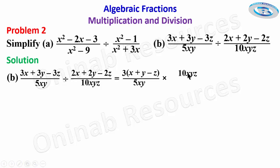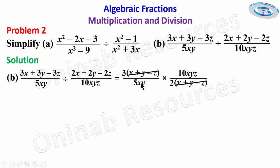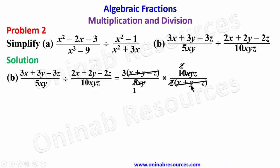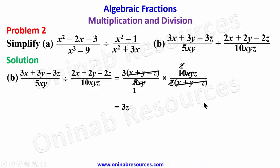We change the division to multiplication and interchange the numerator and denominator of the second fraction, giving 10xyz over 2 into x plus y minus z, since 2 is common in 2x plus 2y minus 2z. Now x plus y minus z cancels with x plus y minus z, xy cancels with xy. For the numerical terms: 5 goes into 10 giving 2, and that 2 cancels with the 2 in the denominator. At the numerator we have 3 and z, and the denominator is 1, so the final solution to problem 2b is 3z.